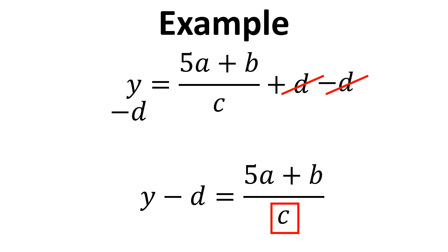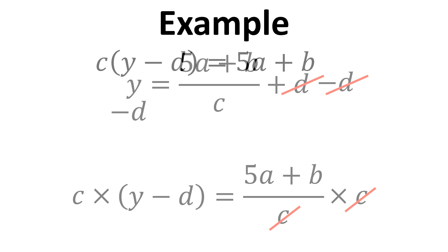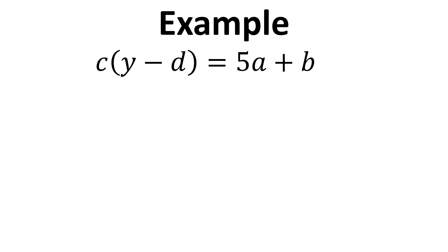Now we've got the situation where C is the least connected or the furthest away from A on the right hand side, so we're going to tackle C next. Just to make this a bit clearer, I'm going to put brackets around the Y minus D. So in order to get rid of C on the right hand side, we're going to multiply both sides by C. That means that C cancels out on the right hand side, and we're left with C multiplied by Y minus D in brackets equals 5A plus B.